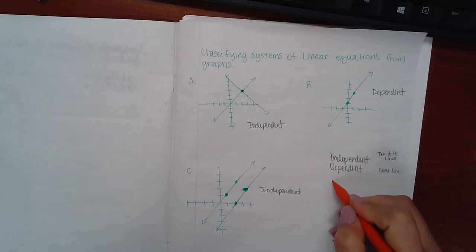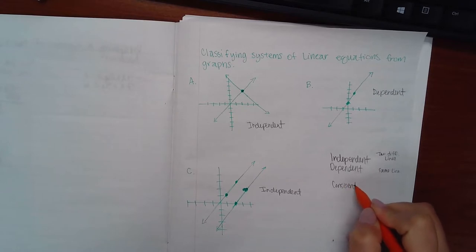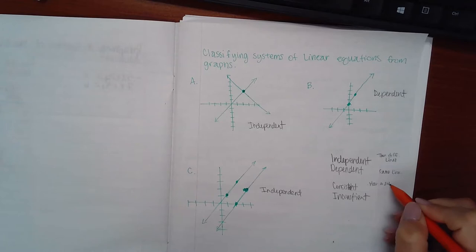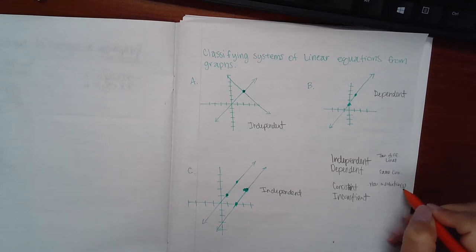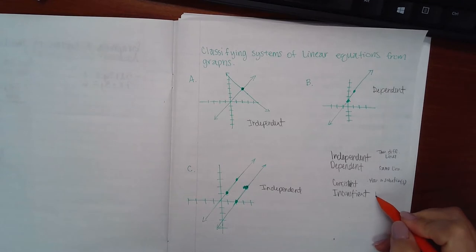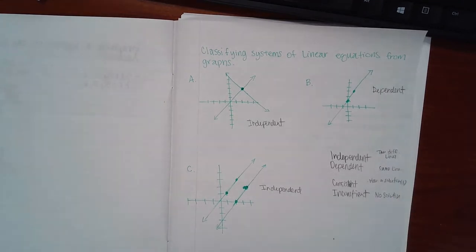The other classification we have is consistent and inconsistent. Consistent means it has a solution or solutions. Inconsistent is when there's no solution. Remember, when you're solving a system of equations, you're looking for where the two graphs intersect.